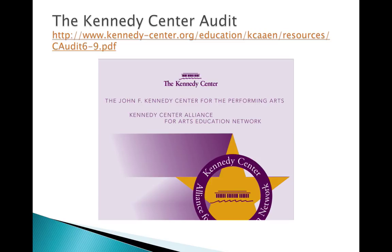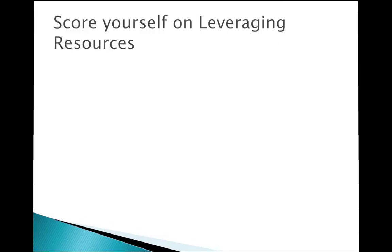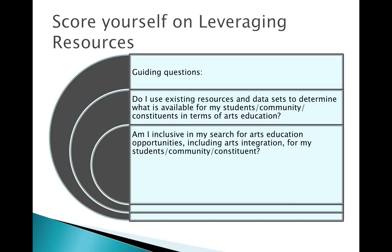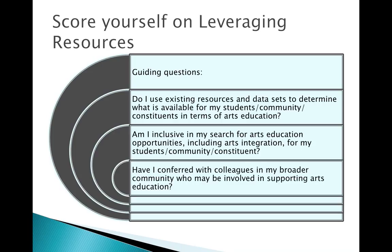Several Arizona communities have successfully used the audit over the last two decades to help them plan and prepare for better arts education. You can find the audit tool at the Kennedy Center website listed above. So now, score yourself on leveraging resources. Do you currently use existing resources and data to determine what's available? Are you inclusive in that search, looking at arts education opportunities that include arts integration across constituencies, looking at varieties of places where the arts may be offered in your community?